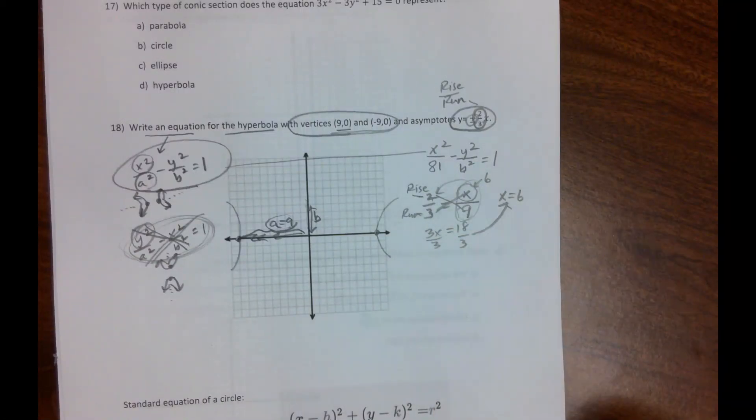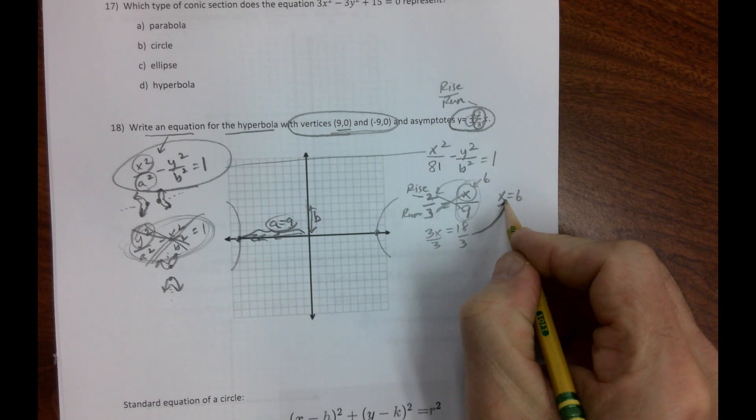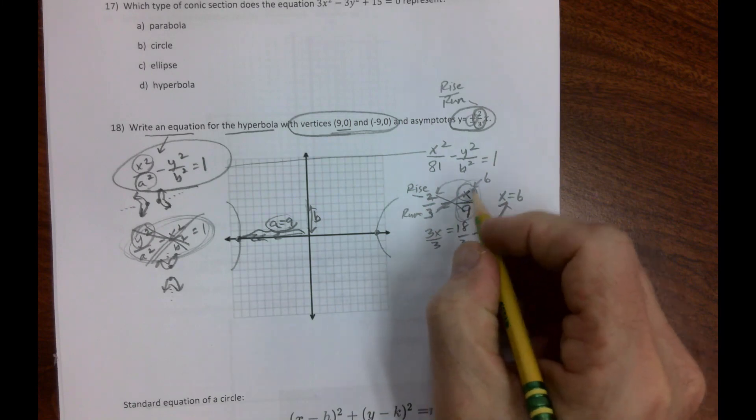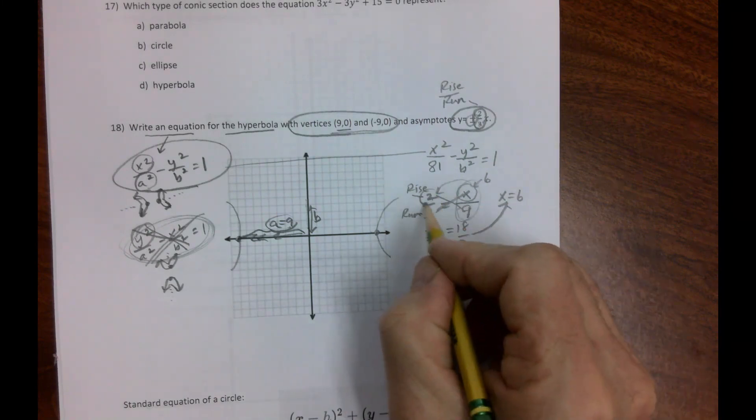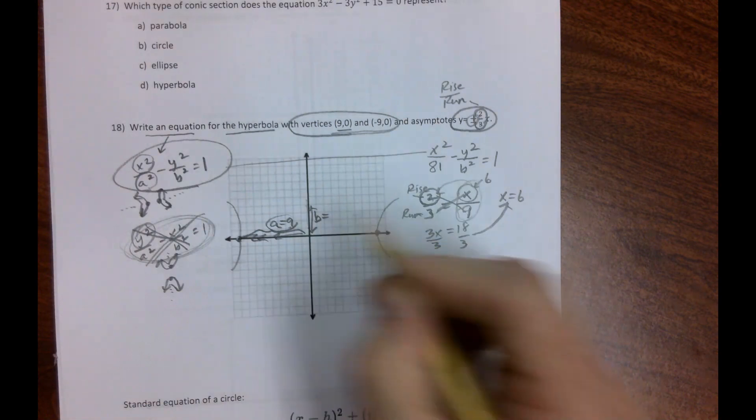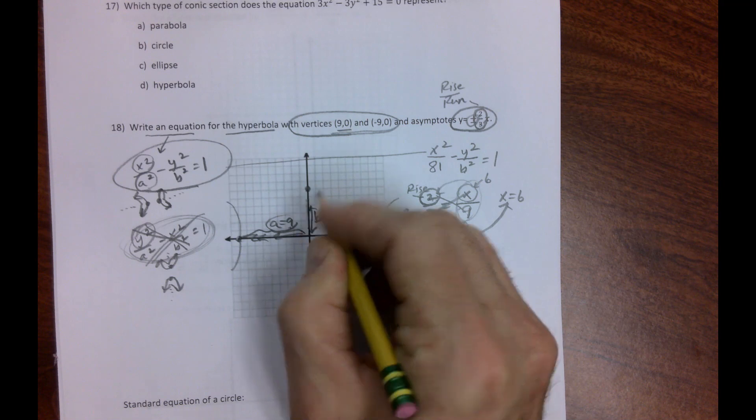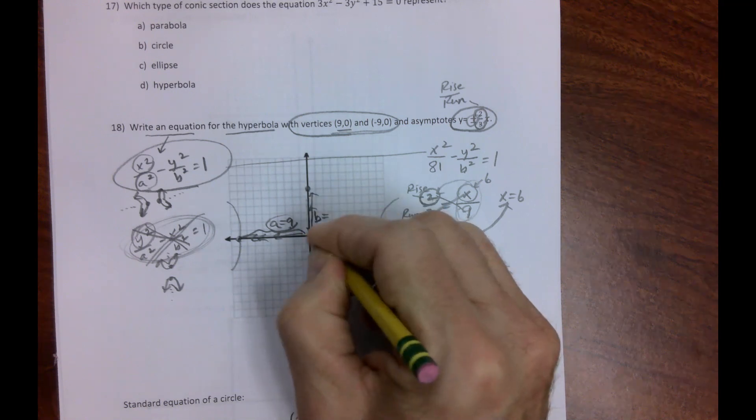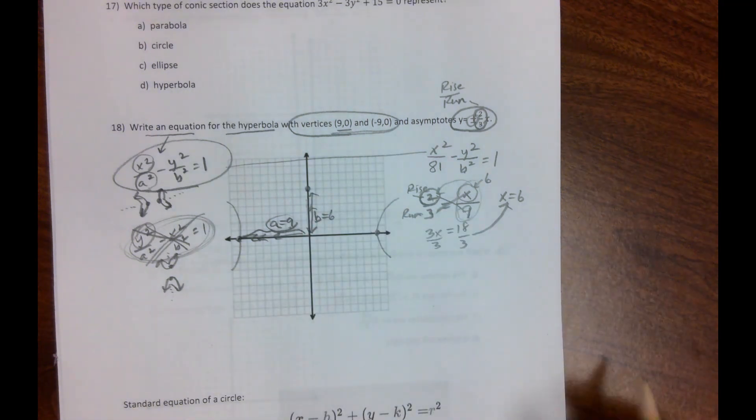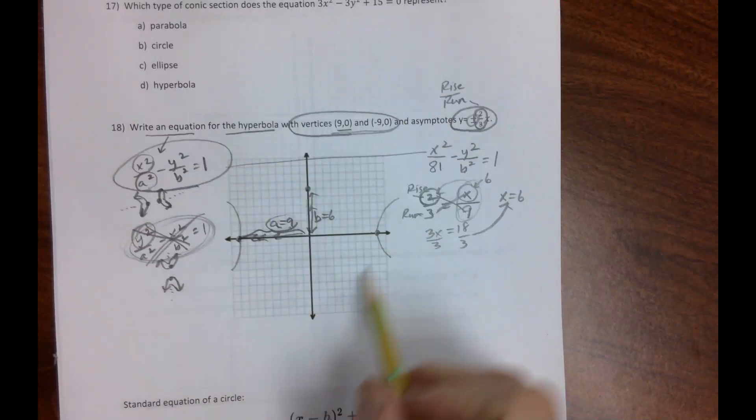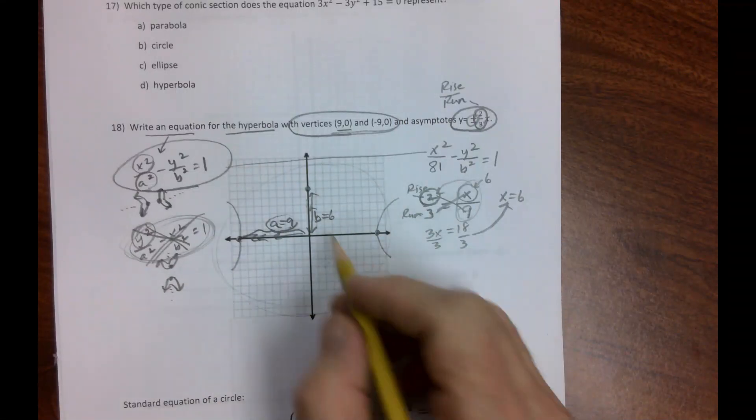If fractions are equal, so are their cross products. Divide by 3 on both sides. No matter how you slice it, x is 6. What is x? x is our rise, which is our b. So we have to go up 6: one, two, three, four, five, six. That's our b.